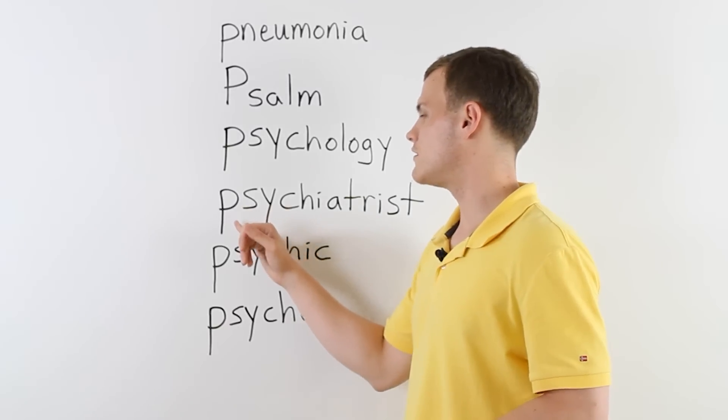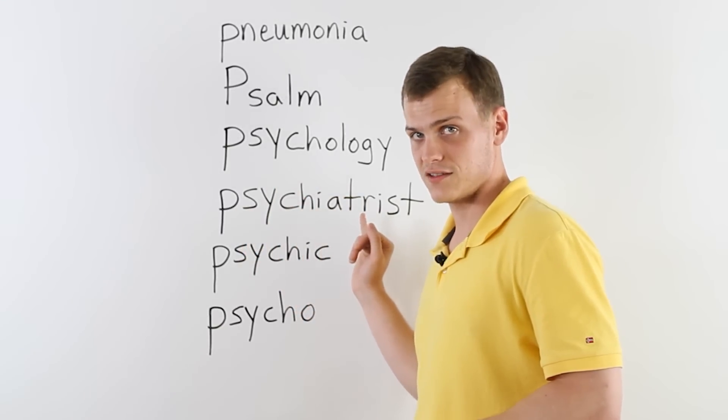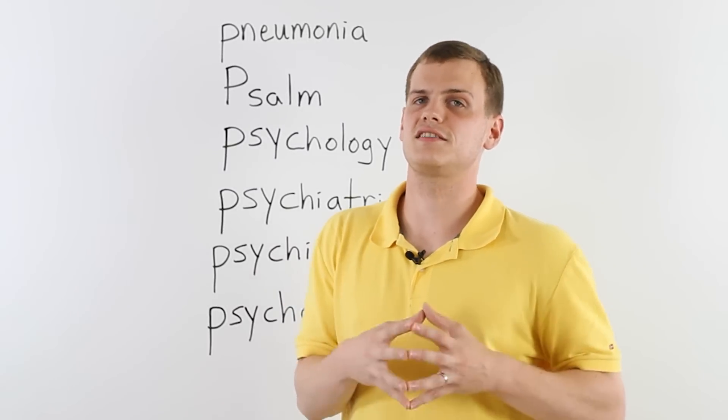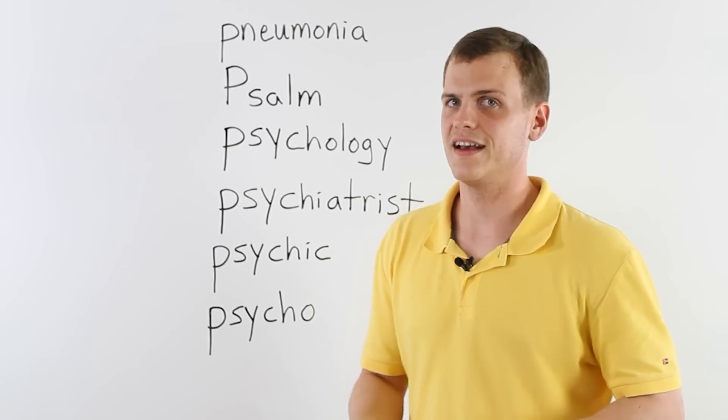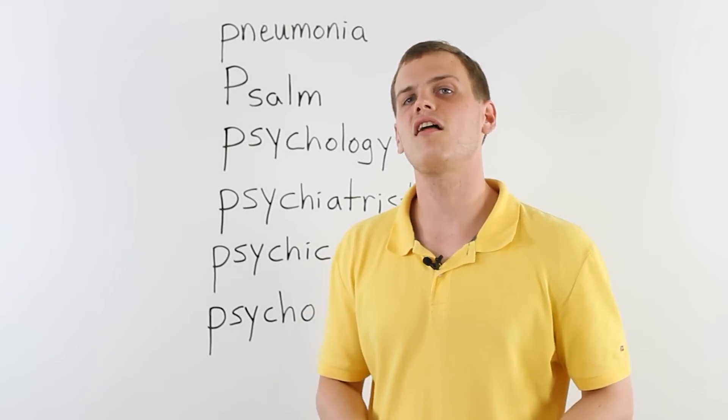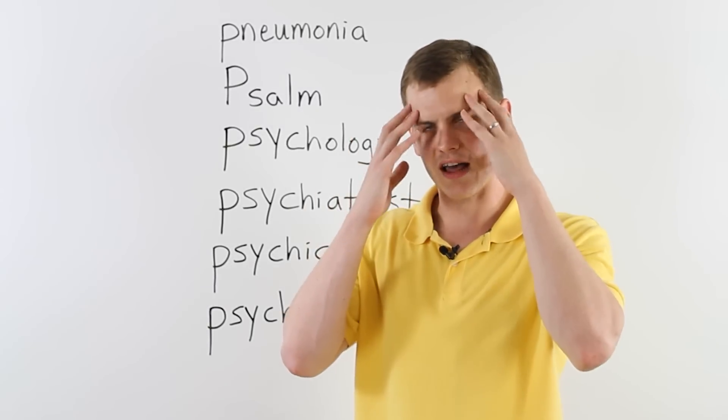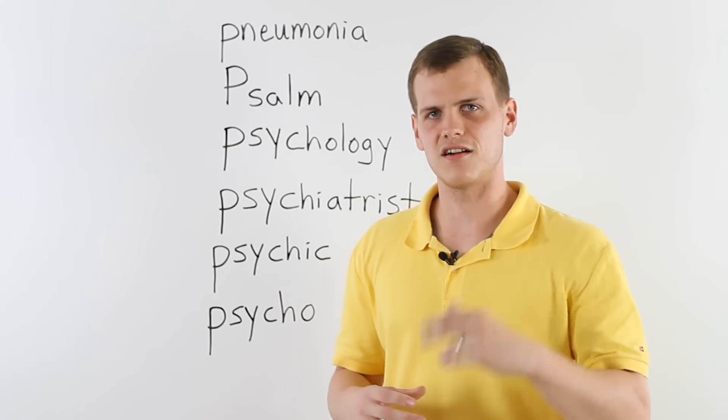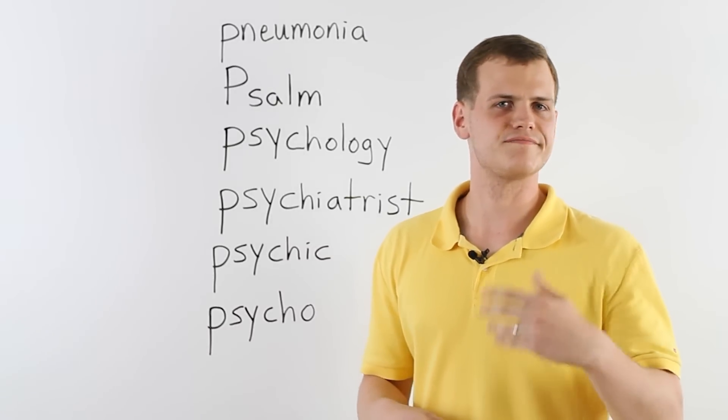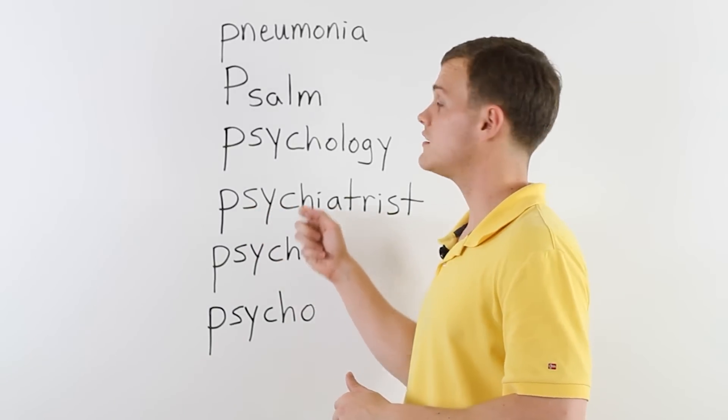So then, down here on the next one, similar to psychology, we have psychiatrist. Psychiatrist is a doctor who is an expert of psychology. They've studied psychology all through university. They know psychology. They help people who want to talk to someone about how they're thinking. They want to see a doctor about their mind. They see the psychiatrist and he helps them with emotional problems or things like that. So a psychiatrist studied psychology.